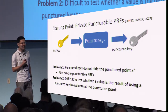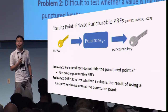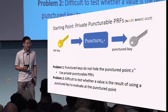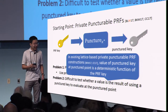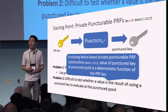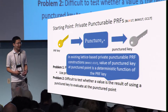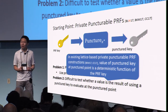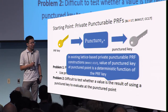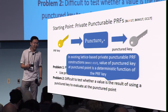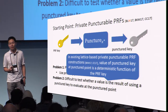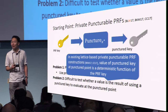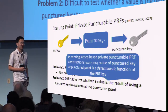The second problem is more difficult: how do we tell whether a value in the range of the PRF actually corresponds to using a punctured key to evaluate at a punctured point? This is fundamental, at least given the existing lattice-based constructions of private puncturable PRFs. In both the Boneh et al. construction and the Canetti and Chen construction of private puncturable PRFs from Eurocrypt this year, the value obtained by using the punctured key to evaluate at the punctured point is actually a deterministic function of the PRF key. So we have very little flexibility in being able to influence or choose the value obtained when the punctured key is used to evaluate at the punctured point.